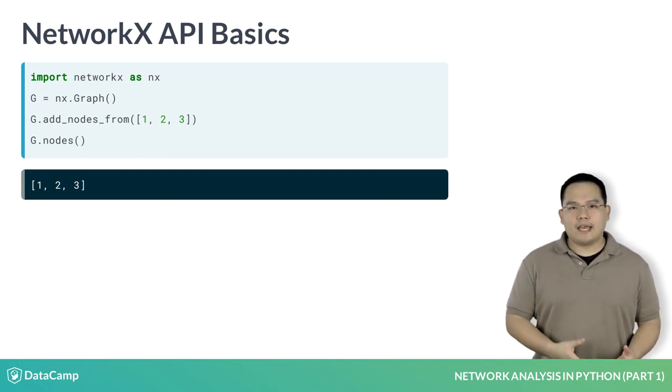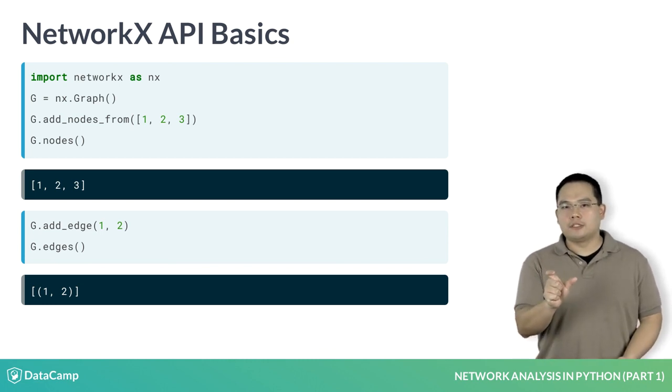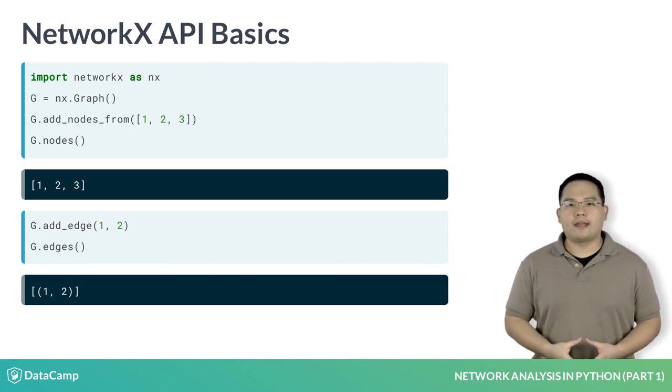If we add an edge between the nodes 1 and 2, we can then use the g.edges method to return a list of tuples which represent the edges in which each tuple shows the nodes that are present on that edge.